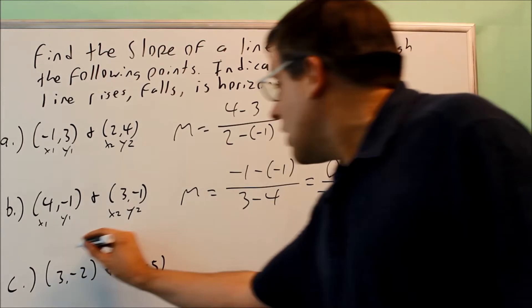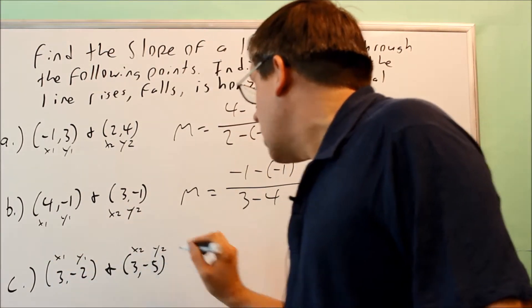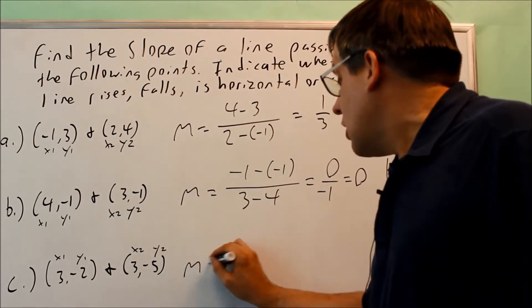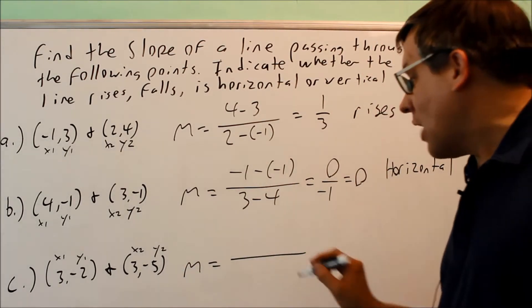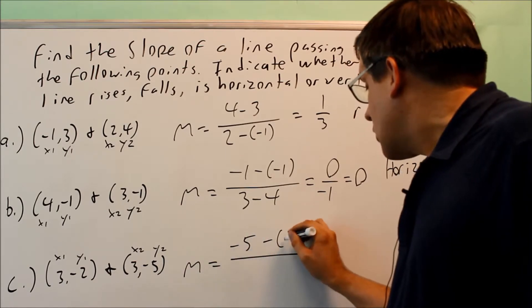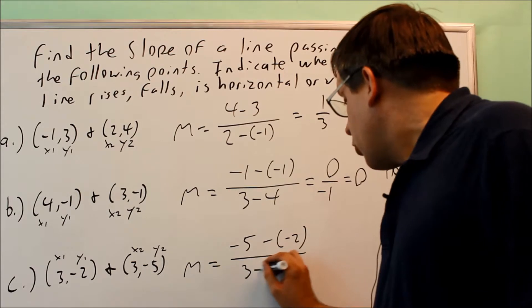Last one. Each of these, I'm also going to do x1, y1, x2, and y2. I'm going to put them into the slope formula. Change in y over change in x. I have negative 5 minus negative 2. Be careful with the negatives. On the bottom, 3 minus 3.